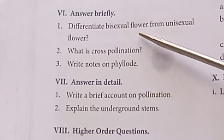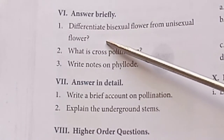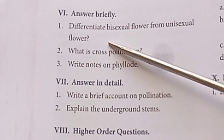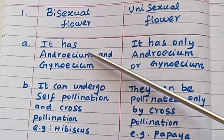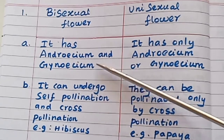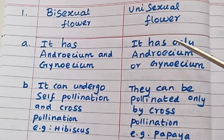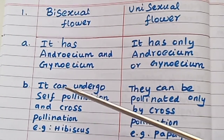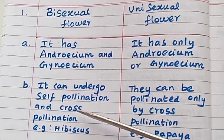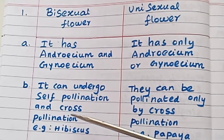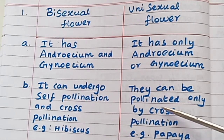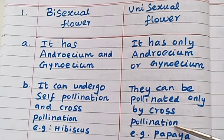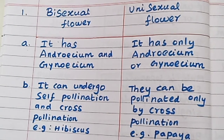Differentiate bisexual flower from unisexual flower. Bisexual flower has both androecium and gynoecium; it can undergo both self-pollination and cross-pollination — example: Hibiscus. Unisexual flower has only androecium or only gynoecium; it can be pollinated only by cross-pollination — example: Papaya.